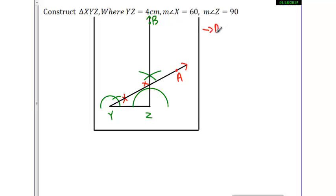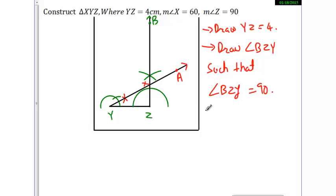Now let's start with the first point. Draw YZ equal to 4. Now draw angle BZY such that angle BZY is equal to, not 90, angle BZY is equal to 30.